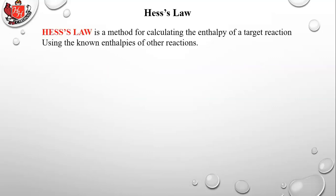Hess's Law is a method for calculating the enthalpy of a target reaction using the known enthalpies of other reactions. There are three fundamental rules that Hess's Law uses to do this.